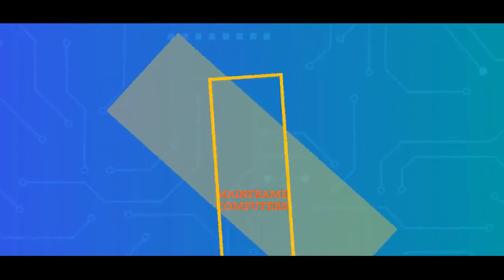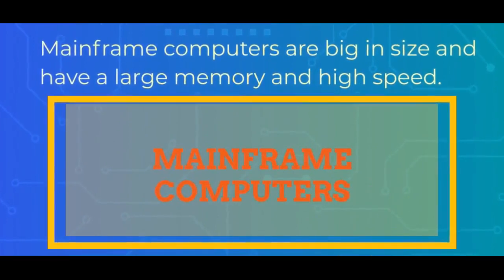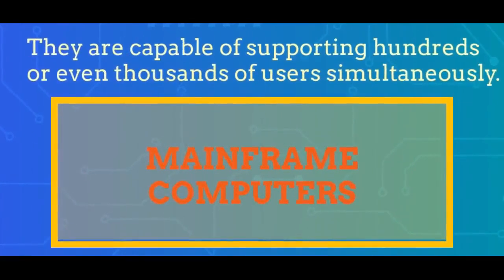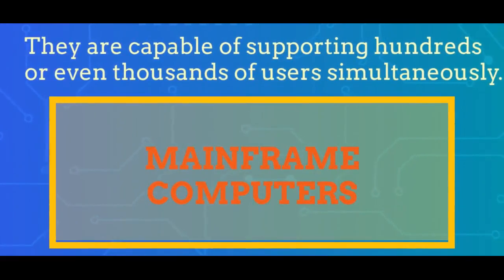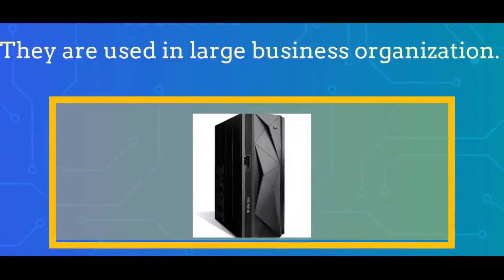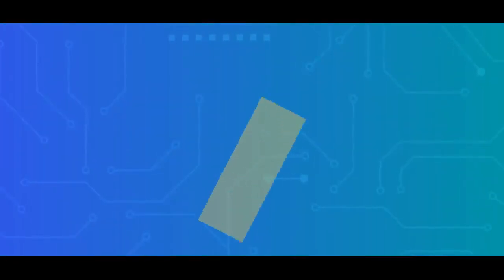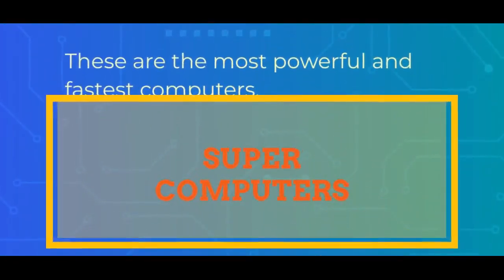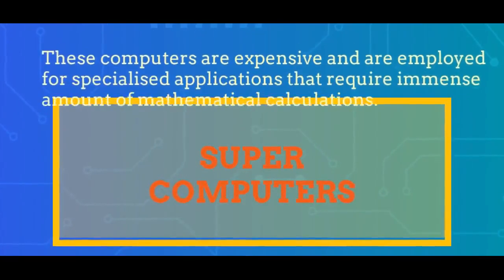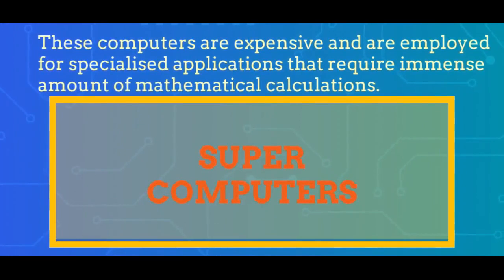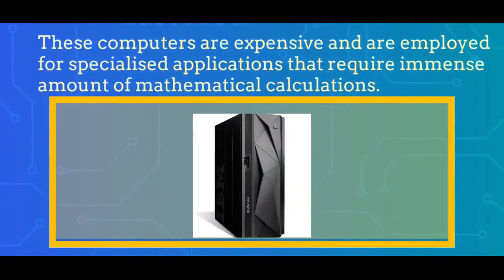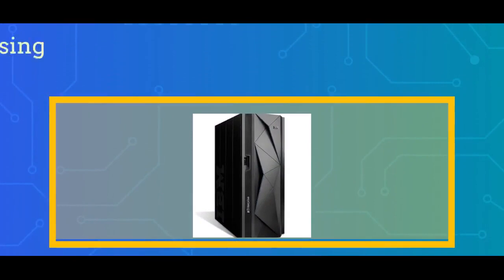Mainframe computers are big in size and have large memory and high speed. They are capable of supporting hundreds or even thousands of users simultaneously. They are used in large business organizations. Supercomputers are the most powerful and fastest computers, expensive and employed for specialized applications that require an immense amount of mathematical calculations, with huge processing speed.